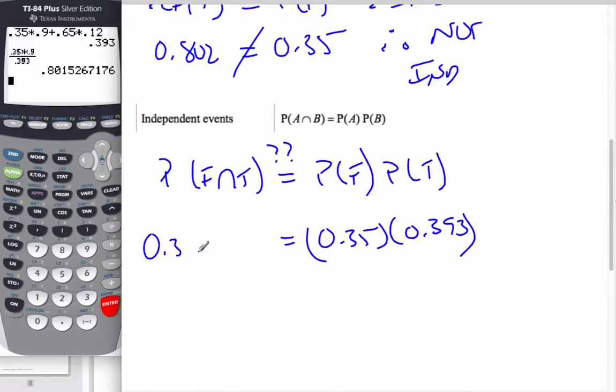0.35 times 0.9. Well, I can already see those values are not the same. These are not, so it is not equal. Therefore, not independent.